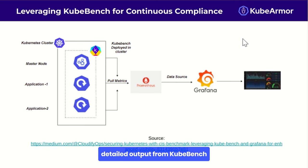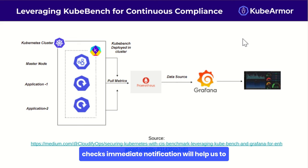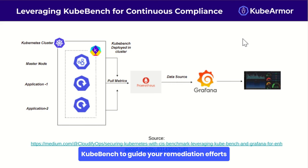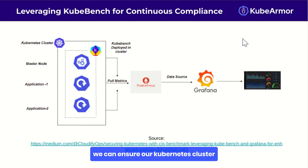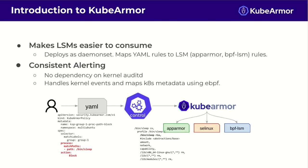Use the detailed output from KubeBench to create compliance reports — these are valuable for tracking progress over time and demonstrating adherence to security standards. Configure alerts for any failed control checks so immediate notification helps you quickly address compliance violations and mitigate potential risks. Use the results from KubeBench to guide your remediation efforts to continuously improve your Kubernetes security posture. By incorporating KubeBench into your continuous compliance strategy, you can ensure your Kubernetes cluster consistently meets industry-standard security best practices.